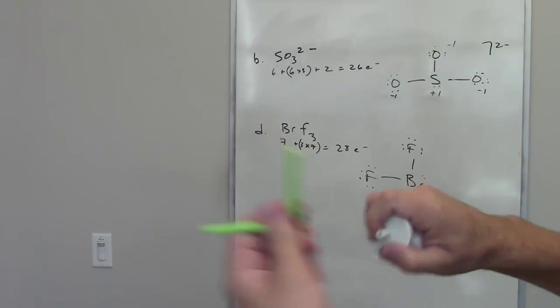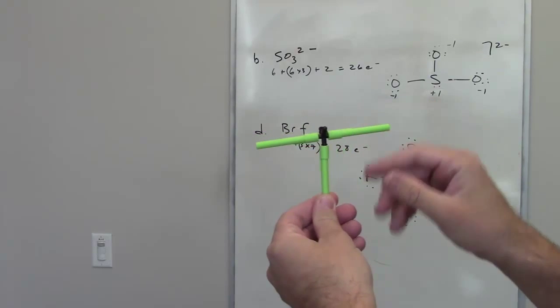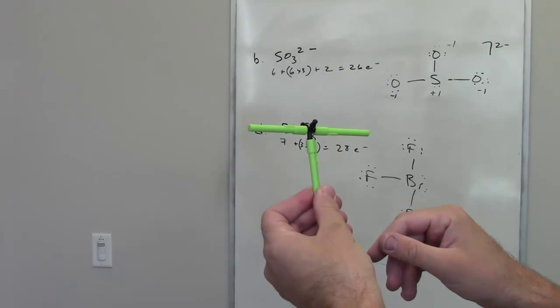Now if I'm looking at molecular geometry, I'll remove the lone pairs and just look at what's left. That is called a T-shaped geometry, so this would be a T-shaped molecule.